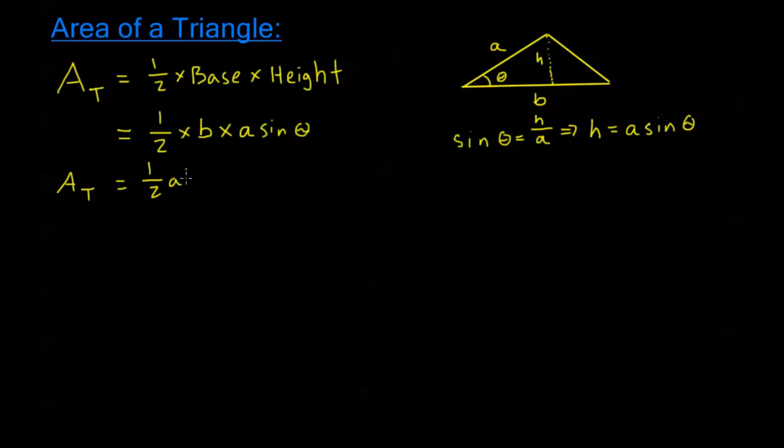This gives us a new formula for the area of the triangle. The area of the triangle is one half a, b, sine theta. Now this is where theta is between a and b.